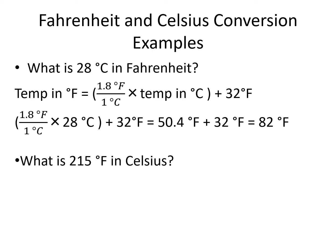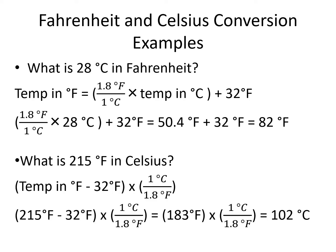In our second example, we are converting from Fahrenheit to Celsius. To do this, we need to rearrange our equation to get Celsius by itself. First, we subtract 32 degrees Fahrenheit, then we divide the whole thing by 1.8 — in other words, we multiply the whole thing by 1 over 1.8. We need to be really careful about our parentheses as we rearrange our equation. Once we have our rearranged equation, we plug in 215 degrees Fahrenheit. We do the 215 minus 32 first and come out with 183, then we divide by 1.8 and come out with 102 degrees Celsius.